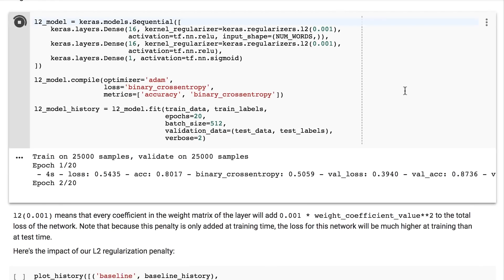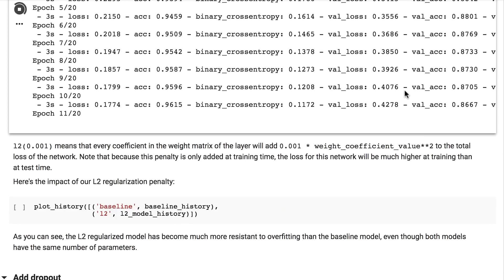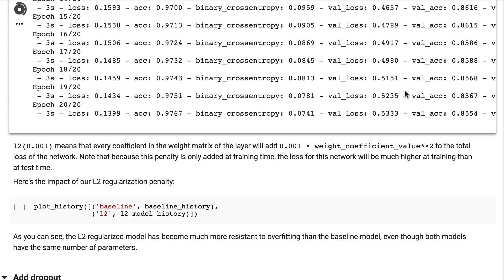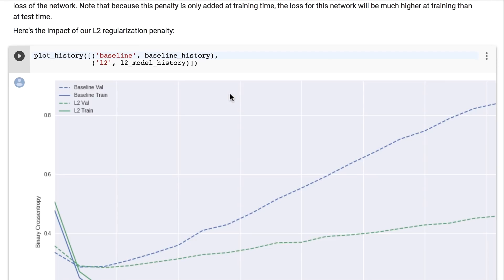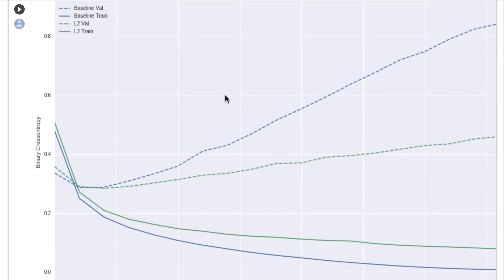Let's train our baseline model using these parameters. As you can see, our L2 model, which is regularized, validates much better on the test dataset than our previous baseline model.